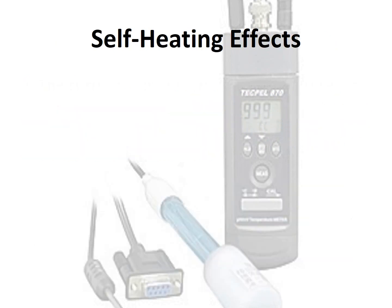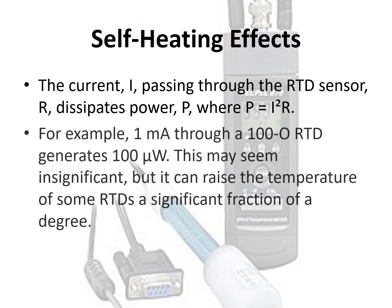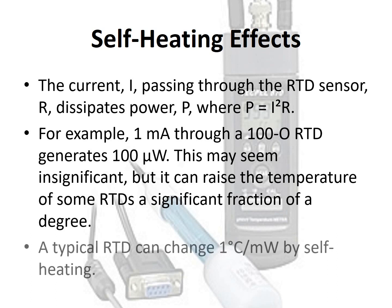Regarding self-heating effects: the current I passing through the RTD sensor R dissipates power P, where P = I²R. For example, 1 milliampere through a 100 ohm RTD generates 100 microwatts. This may seem insignificant, but it can raise the temperature of some RTDs by a significant fraction of a degree. A typical RTD can change 1°C per milliwatt due to self-heating.